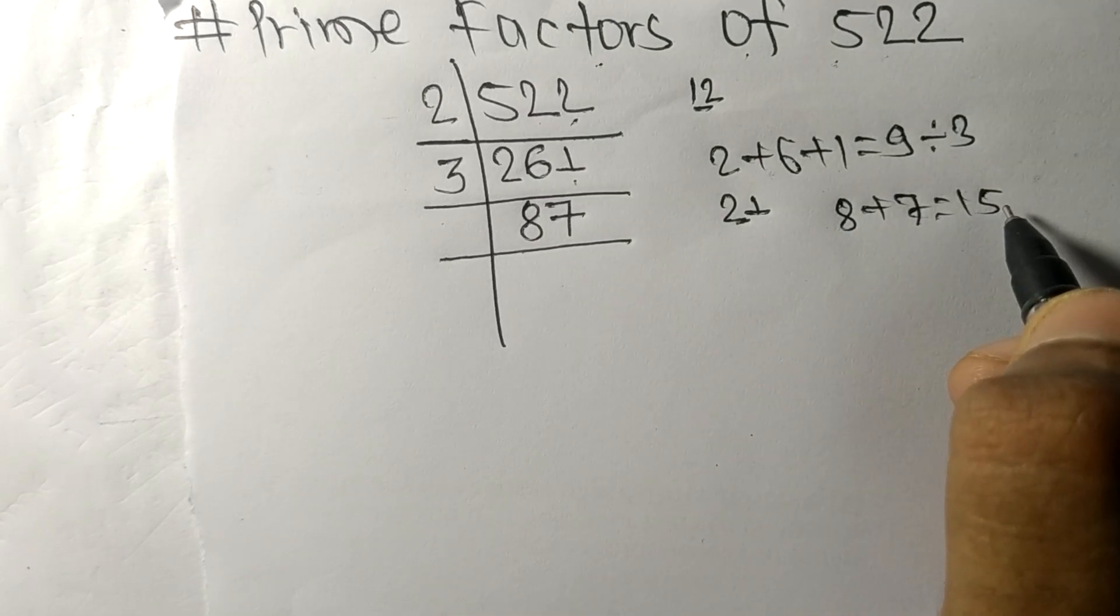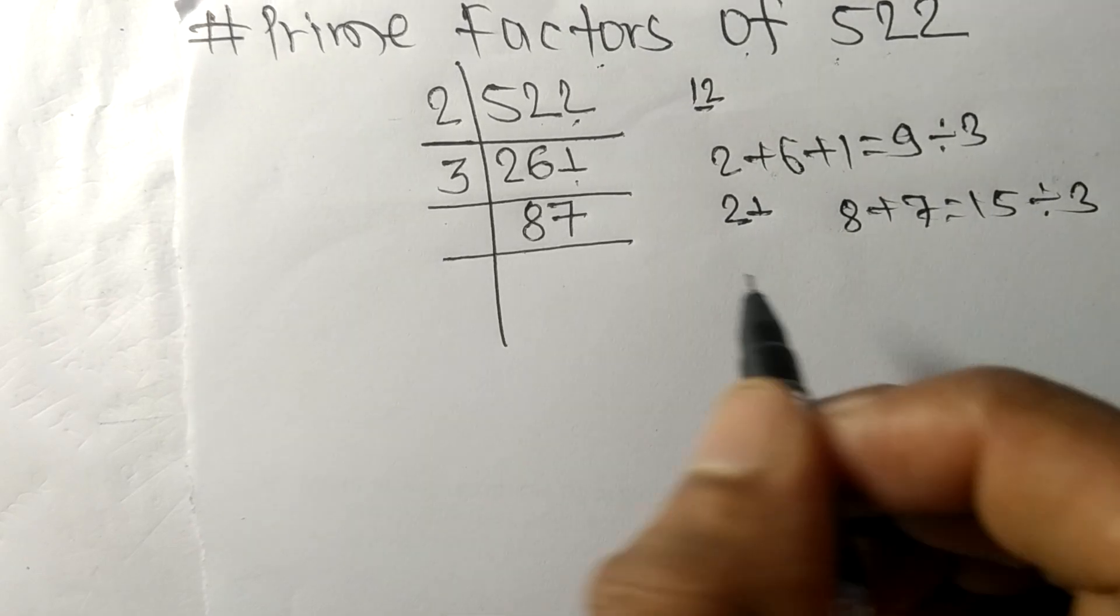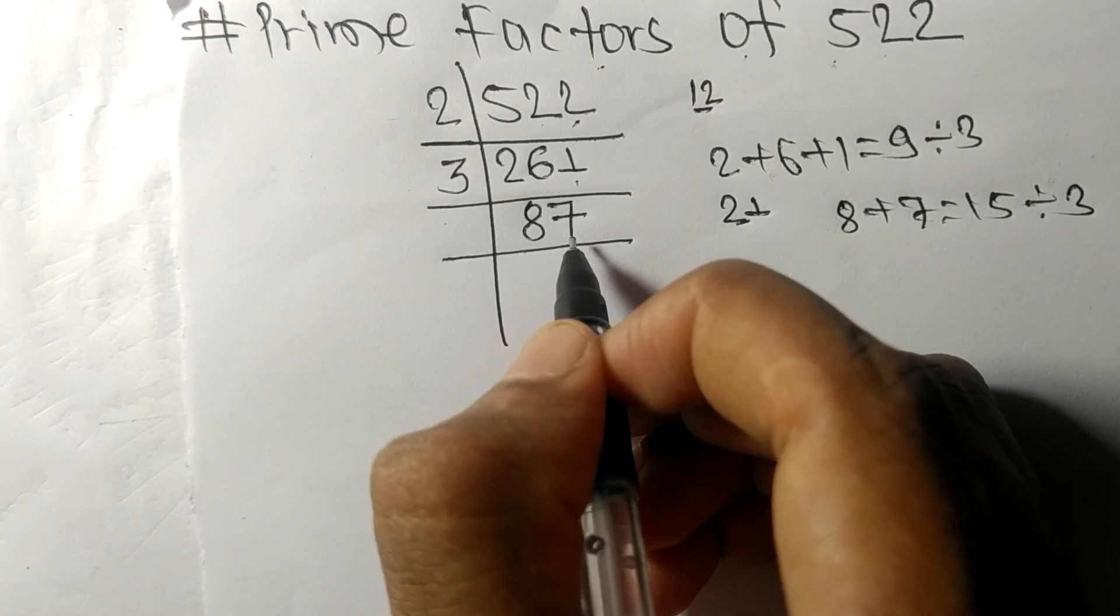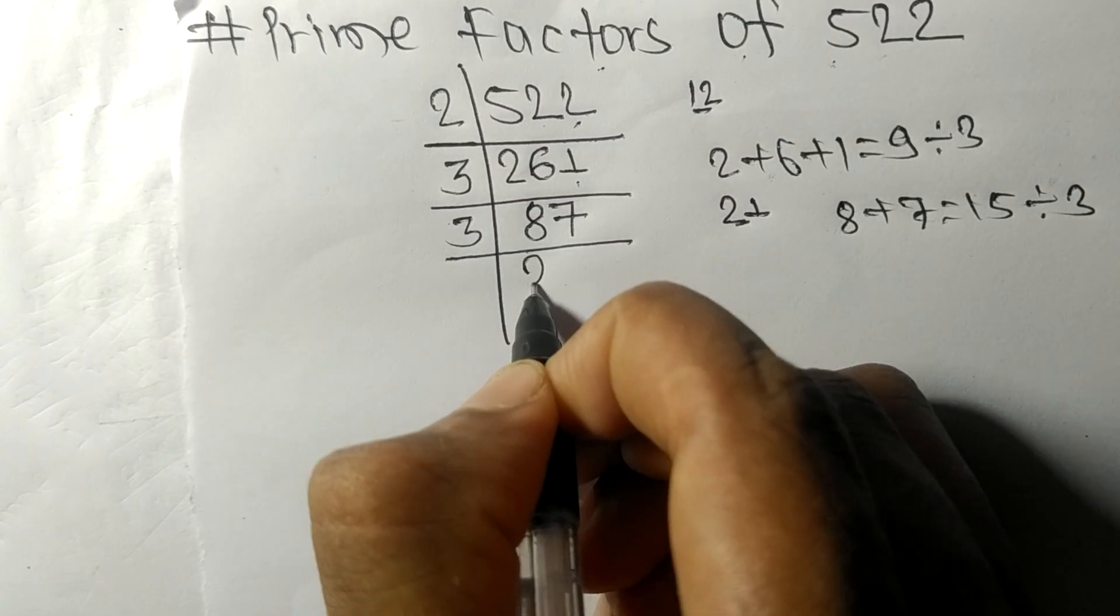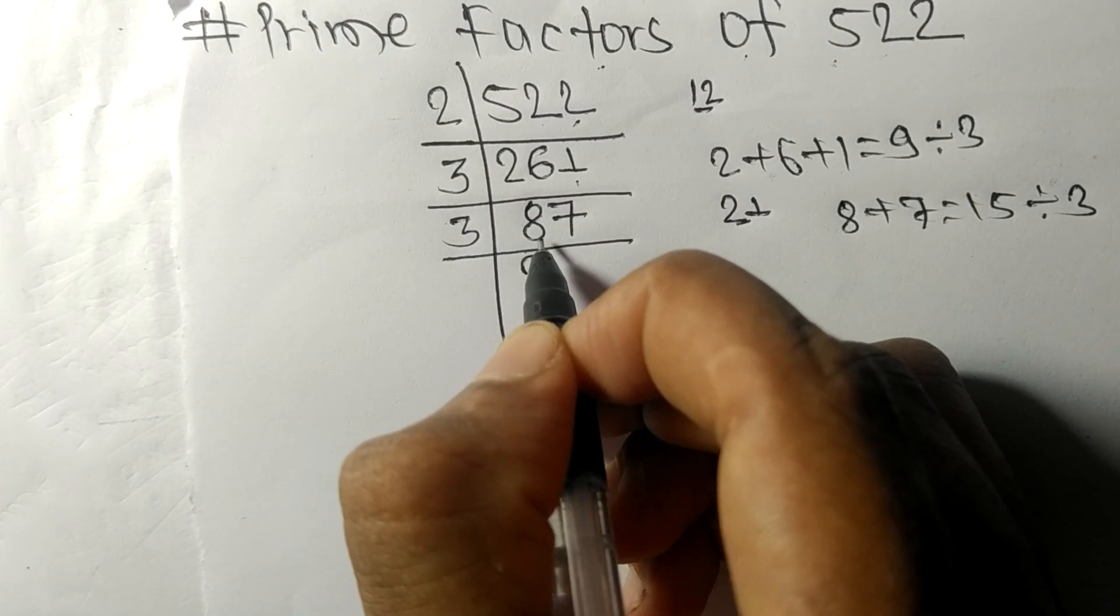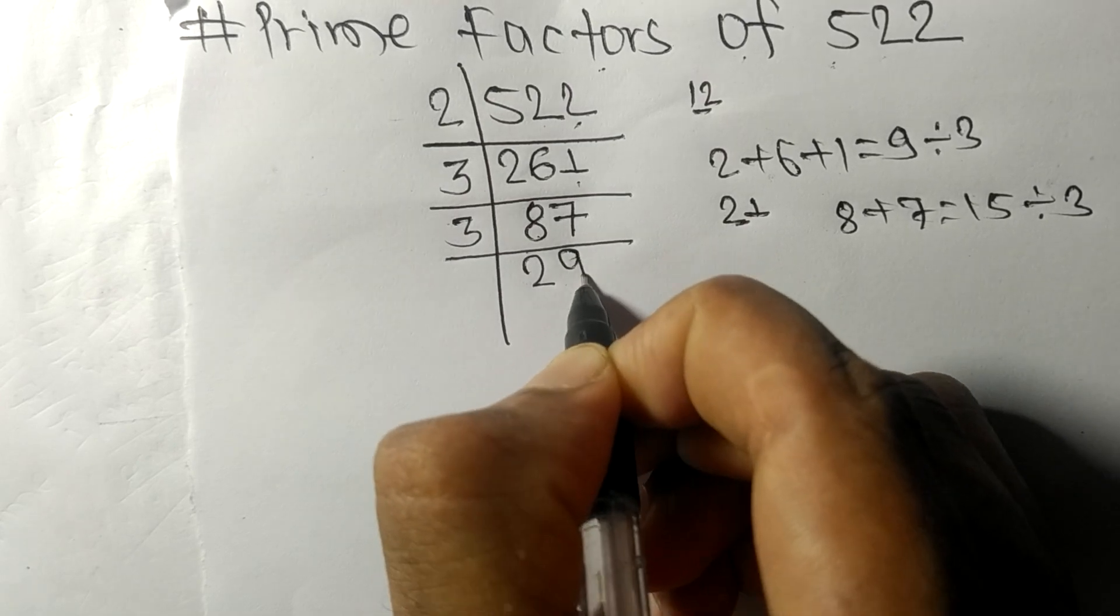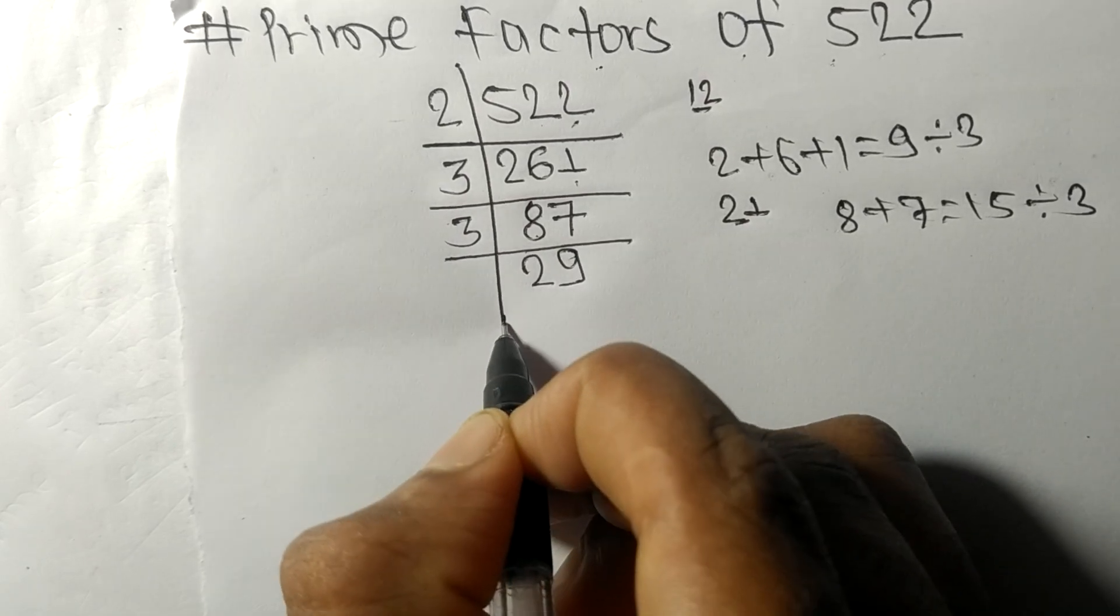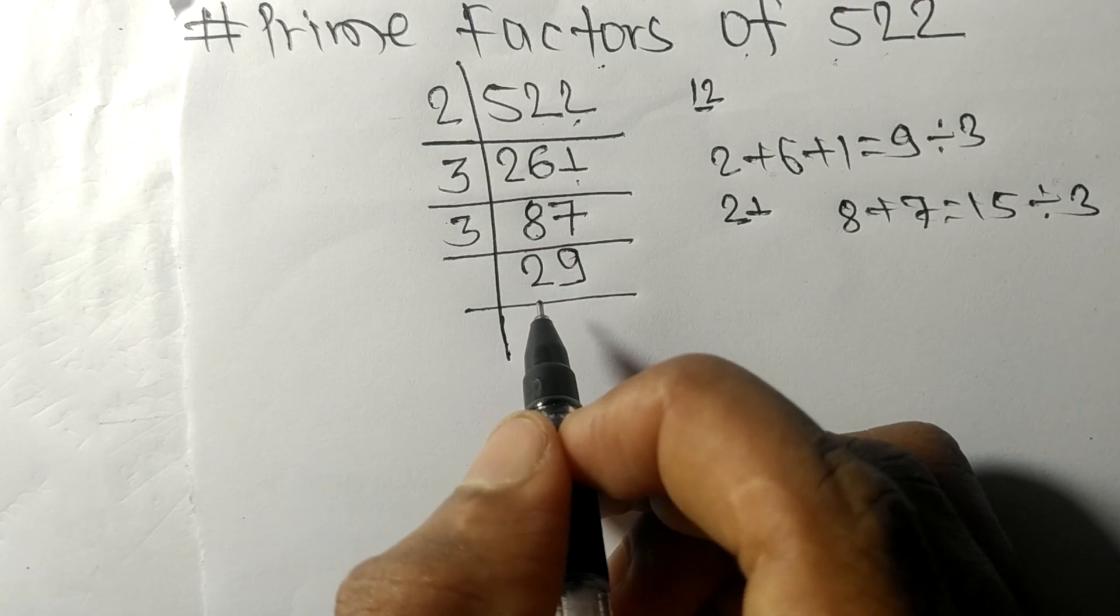15 is exactly divisible by 3, so 87 is also divisible by 3. 3 times 2 means 6, remainder 2. 27, 3 times 9 means 27. So now we got here 29.